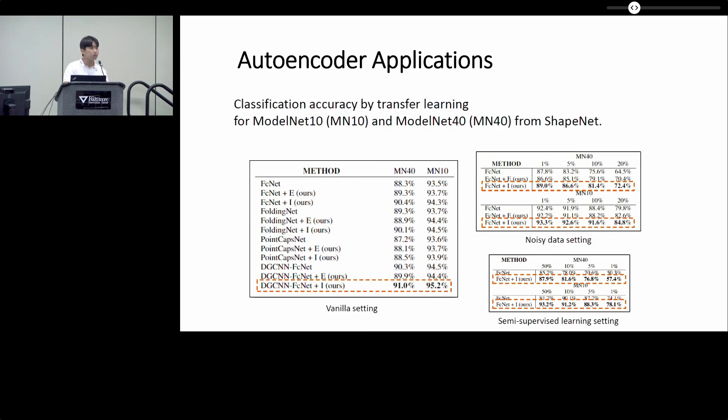Secondly, we show that our framework can be used to find more discriminative representations. For various settings from vanilla, noisy data, and semi-supervised learning, our approach has shown significantly improved transfer classification accuracy as well.